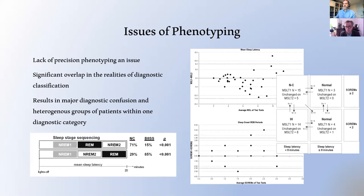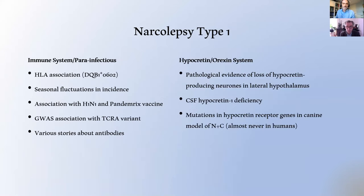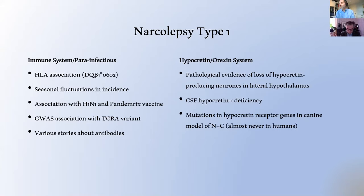In terms of understanding the pathophysiology of these disorders, perhaps the greatest success — unsurprisingly — is in narcolepsy type 1, because the presence of cataplexy is essentially pathognomonic in NT1, allowing us to define a very tight cohort. Obviously there are individuals around the edges, but in terms of a carefully defined group, this is about as good as you can get. This has allowed us to identify two major changes in systems related to this condition.